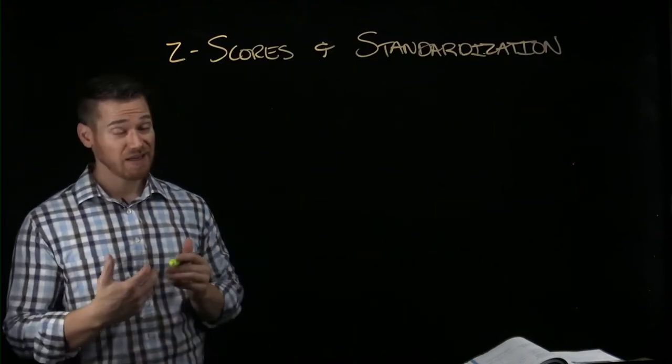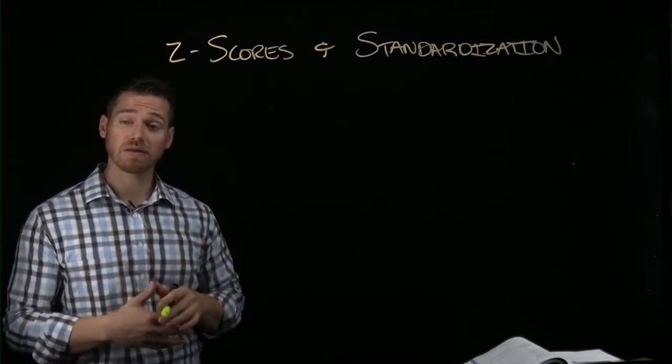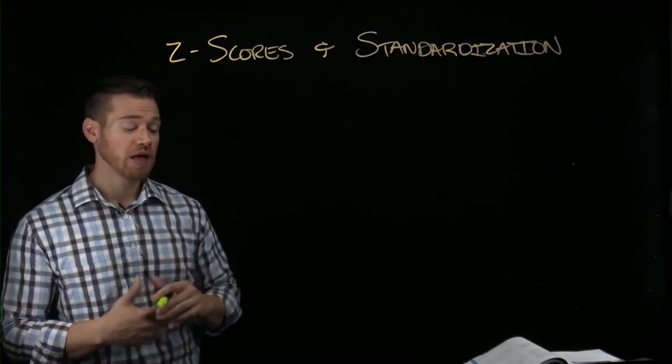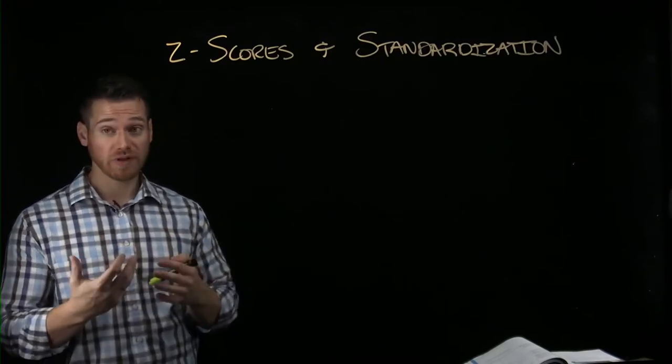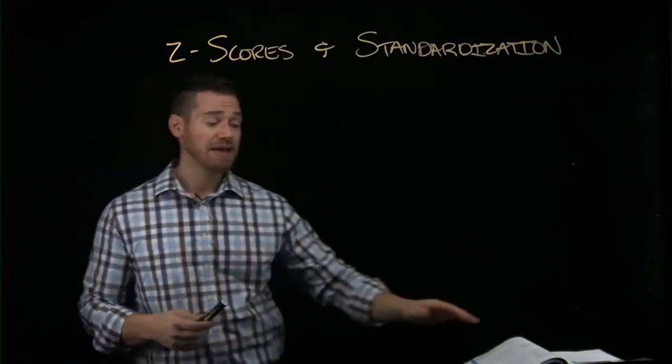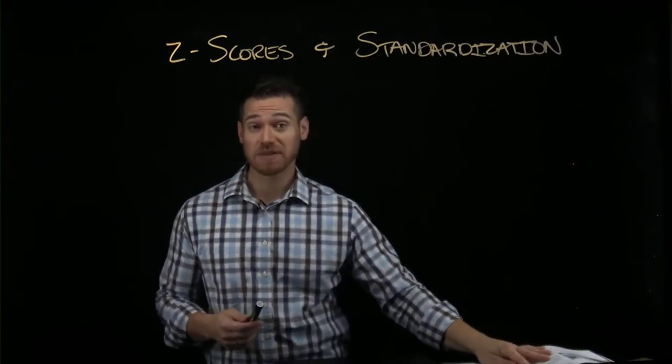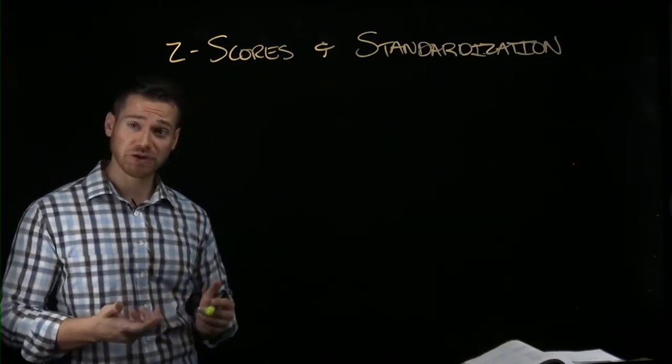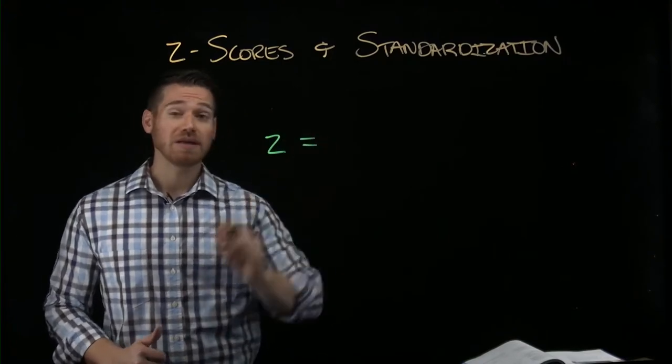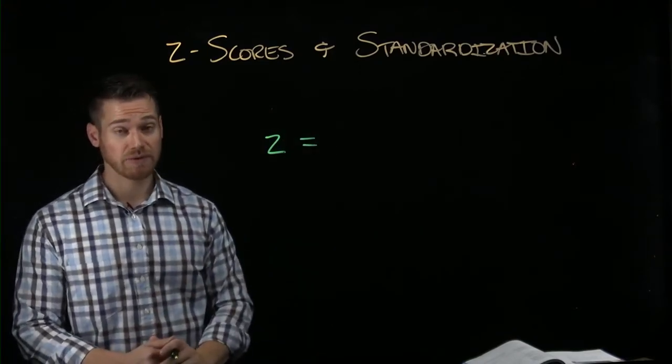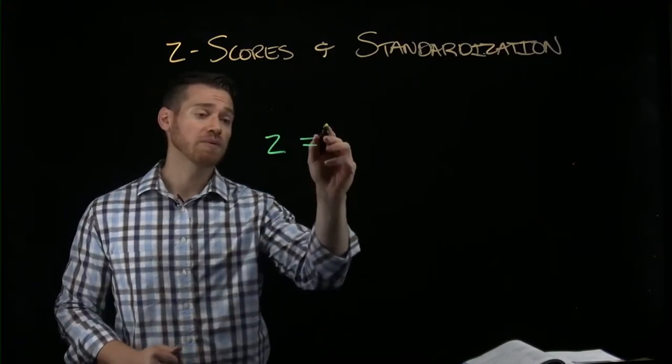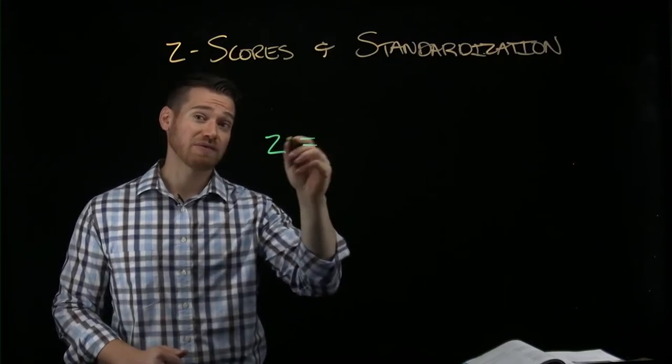All right, so in chapter five, we move on to start talking about z-scores. Z-scores will hopefully be a pretty simple transition if you felt comfortable with the concepts of the mean and the standard deviation, because a z-score is going to use those values. So a z-score is a standardized distance from a mean.